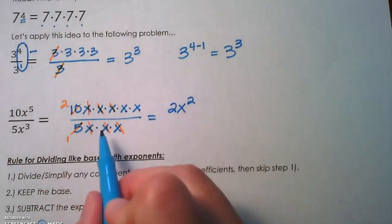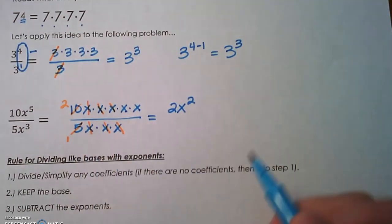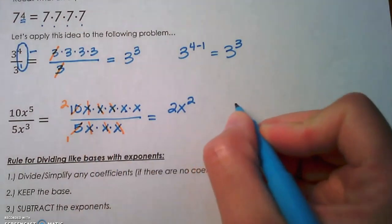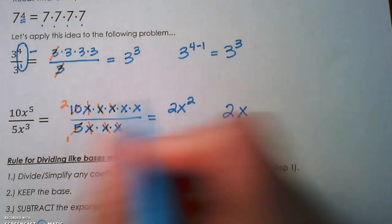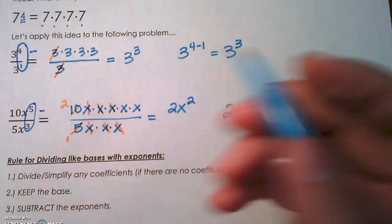We could again bypass this expanded form, but this shows us why we do what we do. The 10 and the 5—10 divided by 5—would give you 2, and then we could keep the x and subtract 5 minus 3 to give us 2x squared.